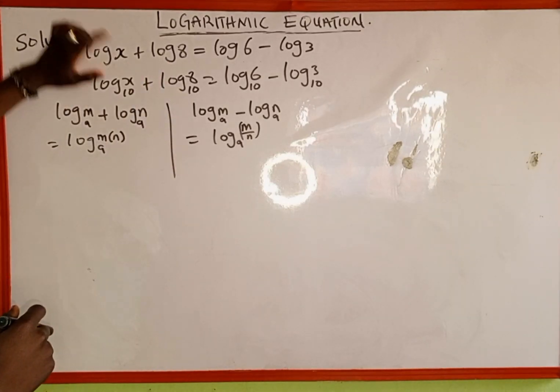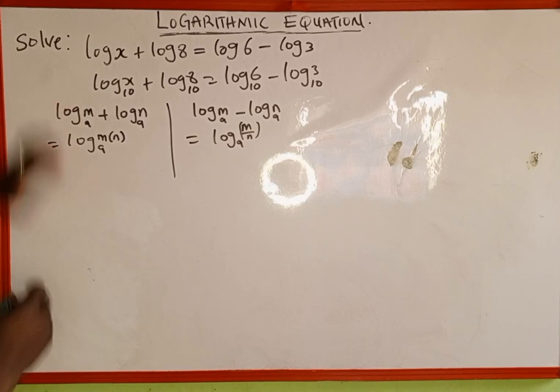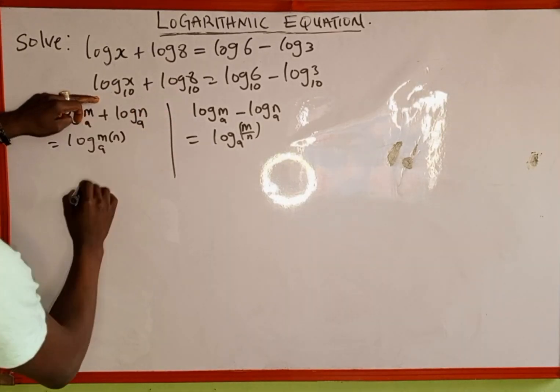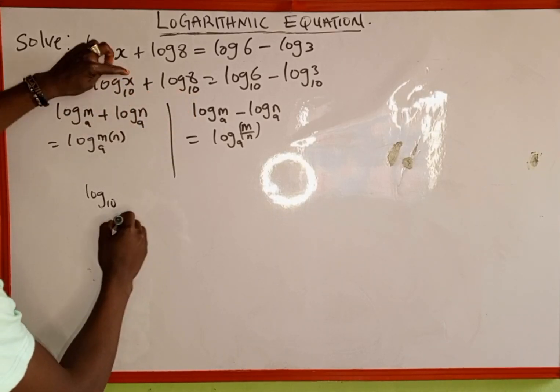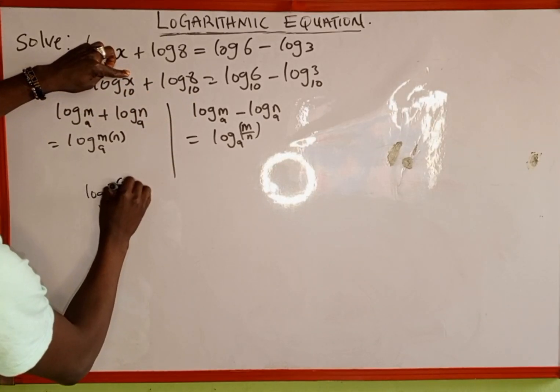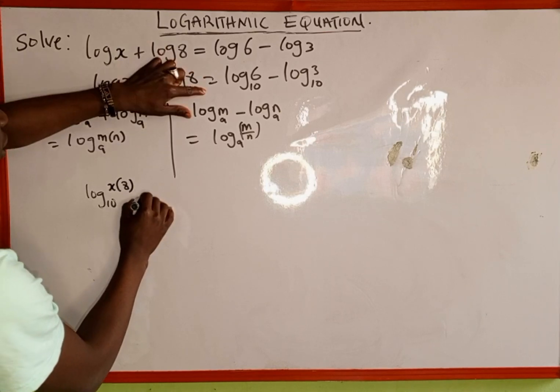So on the left-hand side, we are going to apply this property. This is going to be log to base 10. We write log to base 10, then we multiply the two to be x multiplied by 8.